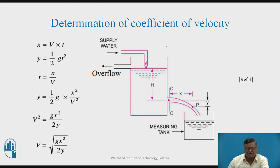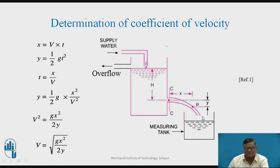Now see this diagram. We have a continuous supply of water to the tank, and we have made a hole here with an overflow pipe attached. The supply is always larger, so once the level reaches a certain point, overflow occurs continuously but the level remains constant. Now let us consider one point P on the jet. The horizontal distance from the vena contracta is x, and the vertical downward distance from the axis of the orifice is y.